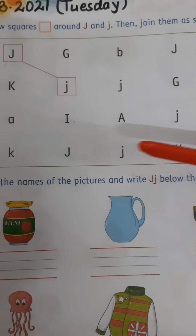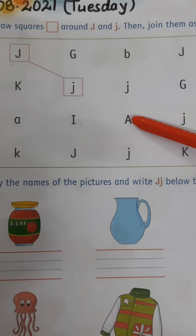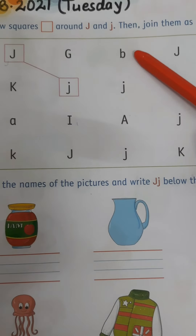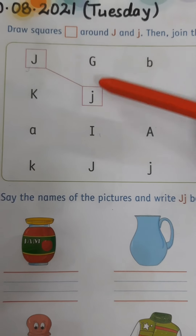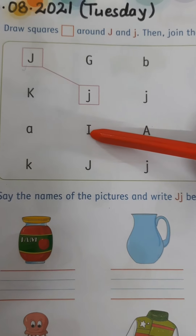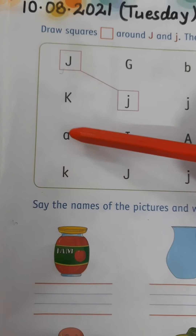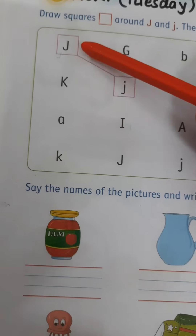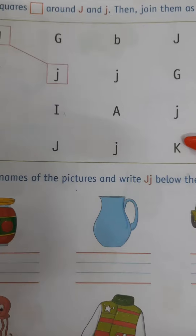So this is letter K. This is small j. This is capital A. This is capital A. Small j. Small b. Capital G. Small j. Capital I. Capital J. Small k. Small a, capital K and capital J. Now we have to find where capital J and small j are — we will draw a square.